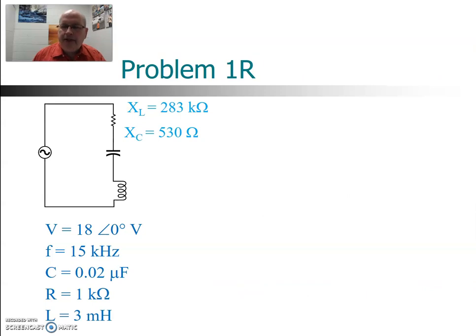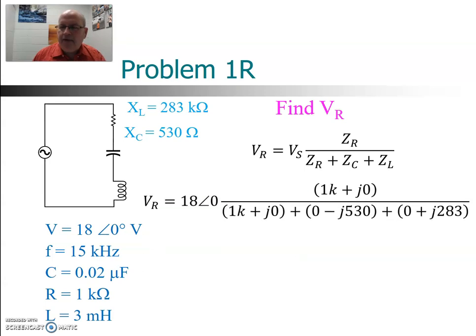Just for fun, I didn't ask you this initially, but let's just try finding the voltage across the resistor. Voltage across the resistor, very similar to what we did a moment ago, except in the numerator we're going to put ZR instead of ZC. So everything else looks pretty much the same. The numerator now is 1kΩ+j0. And now we do the arithmetic and you get 17.5∠13.9 volts.